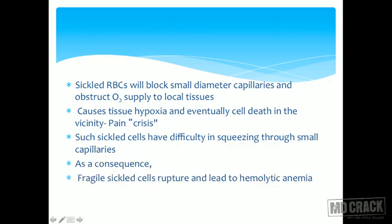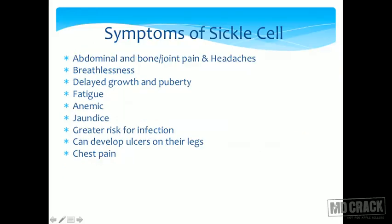As a consequence, fragile sickle cells rupture, leading to hemolytic anemia. Symptoms can include abdominal pain, bone and joint pain, headaches, breathlessness, delayed growth and puberty, fatigue, anemia, jaundice, greater risk for infection, ulcers, and chest pain.